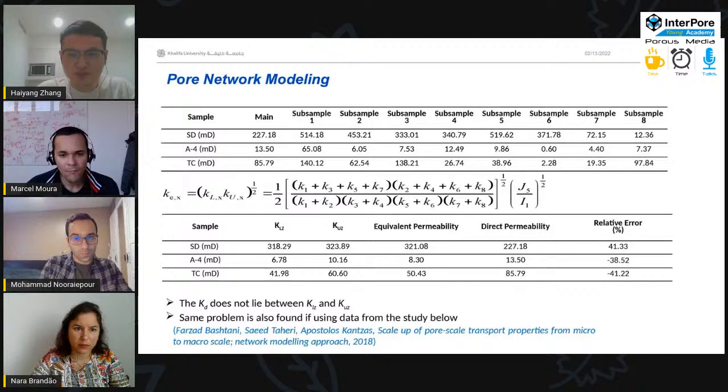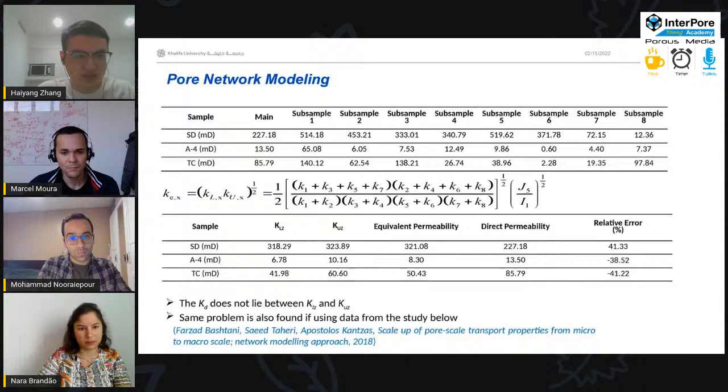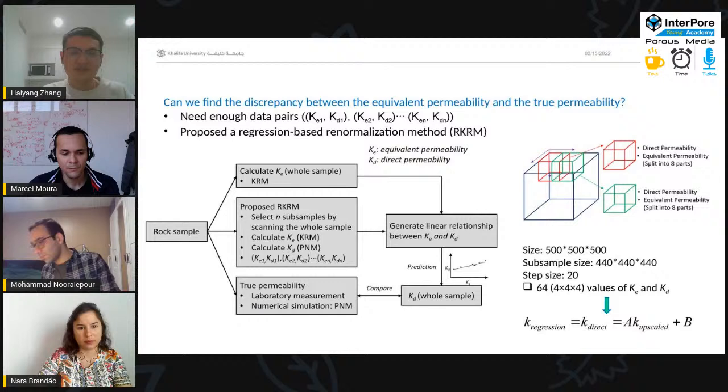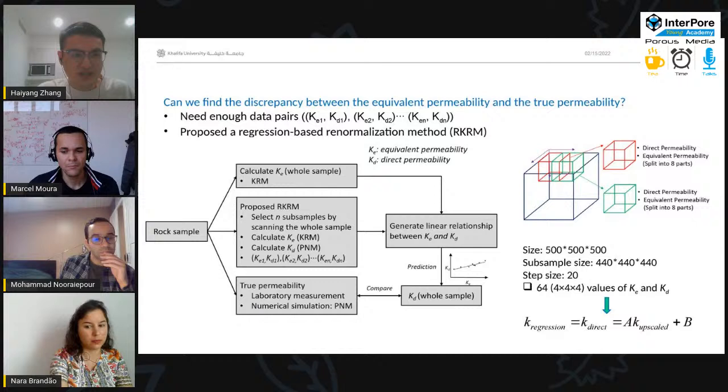The relative high relative errors are caused by due to the fact that the direct permeability does not lie between the lower bound and upper bound. And the same problem can be found if we use the data in the study below. So we are thinking, can we find the description of the equivalent permeability and the true permeability? This means that we need enough data pairs to gather the relationship between these two values. And we propose a regression-based renormalization method, and we term it RKRM.